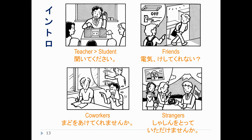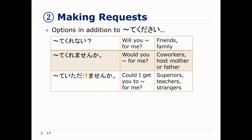These are the new ways we will introduce in this chapter to make requests. Te-kurenai we can use with our friends and family. The idea is like 'will you do X for me?' So this is still a request — it's not an order we're giving them, but it's pretty casual. We use it between people who are close.